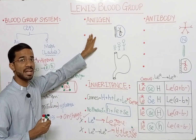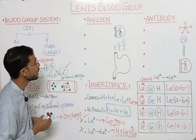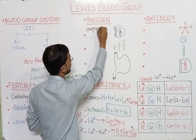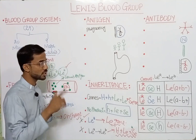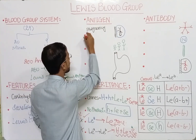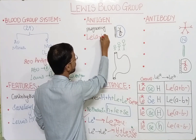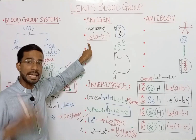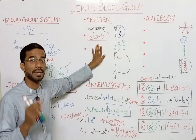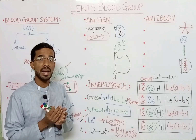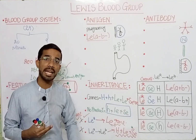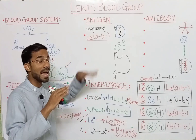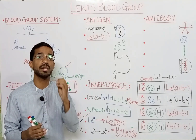Next we will discuss the antigens and antibodies of the Lewis blood group system. An important point regarding antigens: during pregnancy, the condition goes towards LEa negative and LEb negative — you will never see any LEa or LEb antigen during pregnancy. This is a temporary condition.